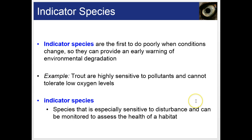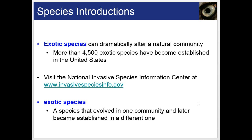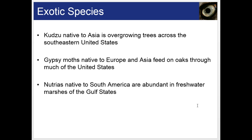Indicator species are the first to do poorly when conditions change, so they provide an early warning of environmental degradation. For instance, trout are highly sensitive to pollutants and cannot tolerate low oxygen levels — they can tell us when something is wrong in a body of water. Exotic species, also called invasive species, can dramatically alter a natural community. More than 4,500 exotic species have become established in the United States. Kudzu, native to Asia, is overgrowing trees across the southeast U.S. Gypsy moths, native to Europe and Asia, feed on oaks. And nutrias, native to South America, are abundant in freshwater marshes of the Gulf states.